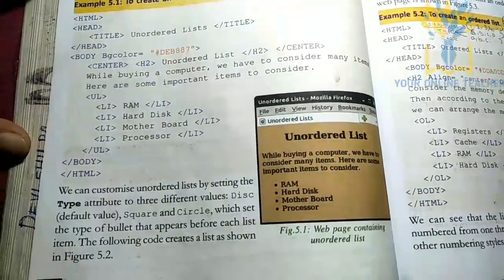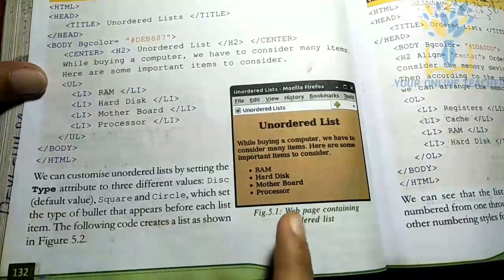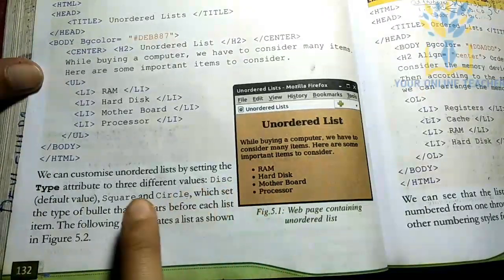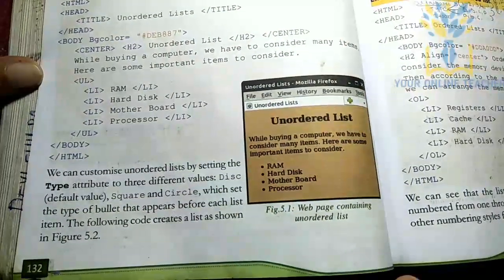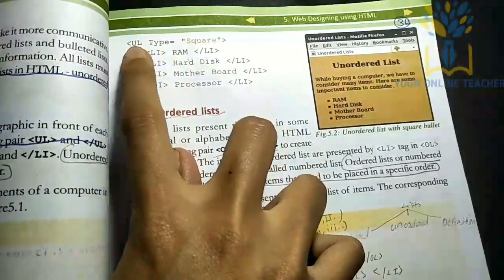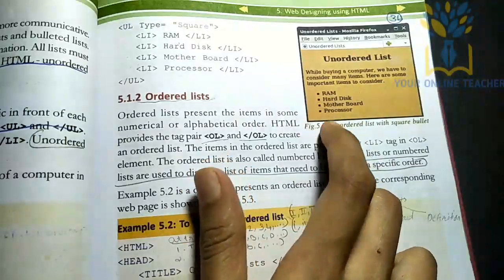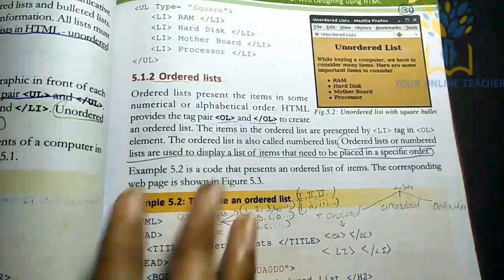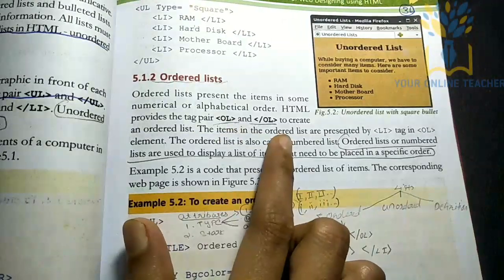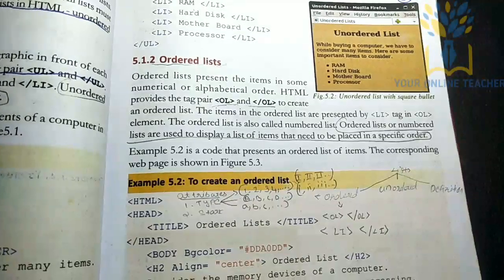In the unordered list tag, if you specify a type attribute, you can add a bullet style such as square or circle. You can add a square in the unordered list.